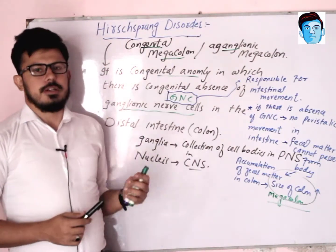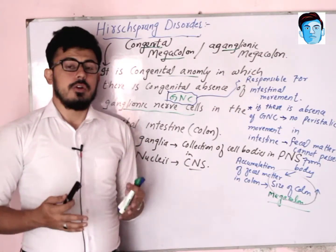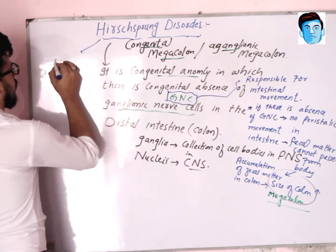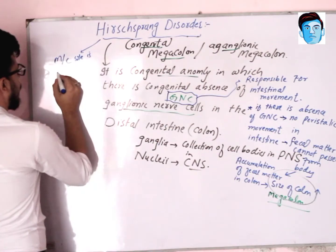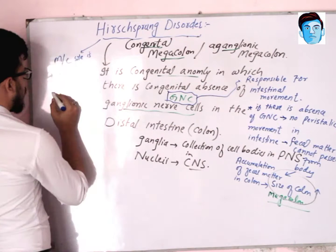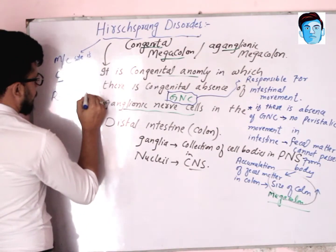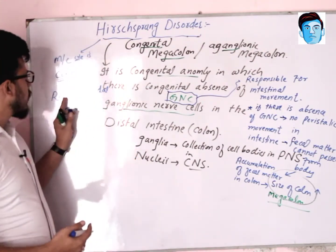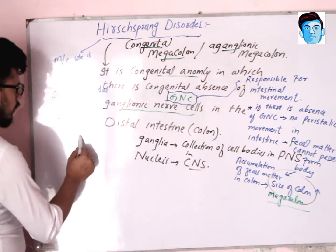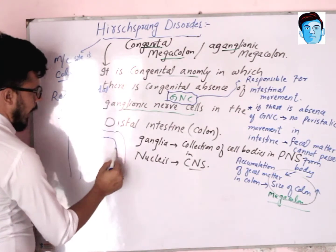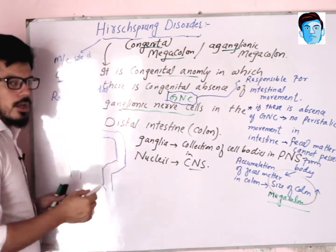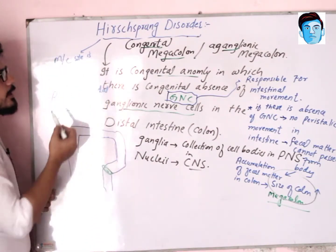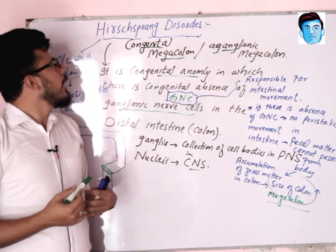The most common site of Hirschsprung disease — although it can occur in every segment of the intestine — is the large intestine, and more specifically the recto-sigmoidal colon. The colon includes the ascending colon, transverse colon, descending colon, sigmoid, rectum, and anus, and the recto-sigmoidal portion is most prone to Hirschsprung disease.